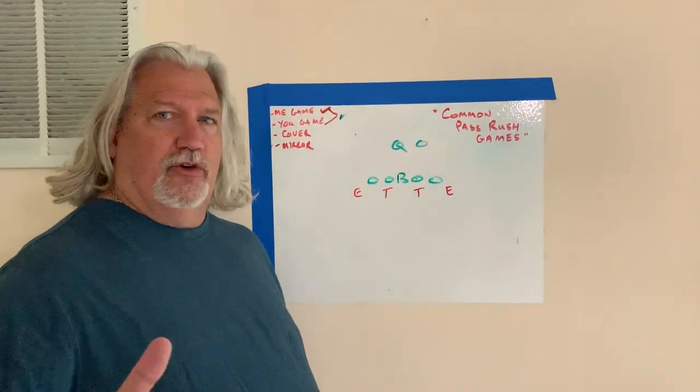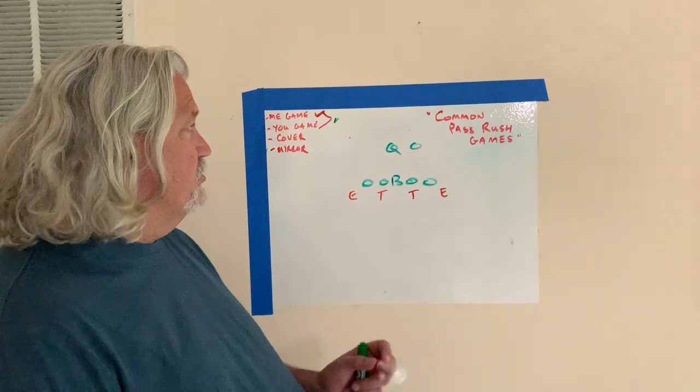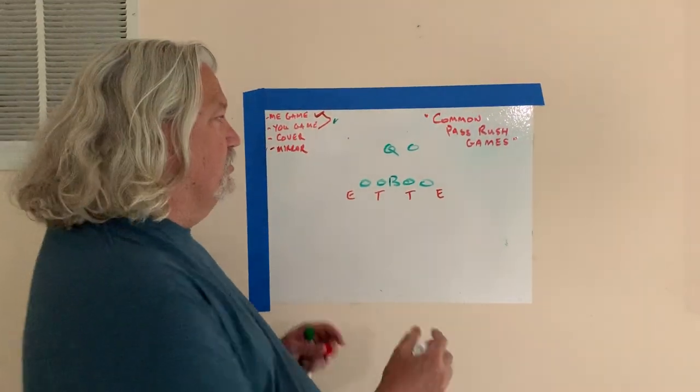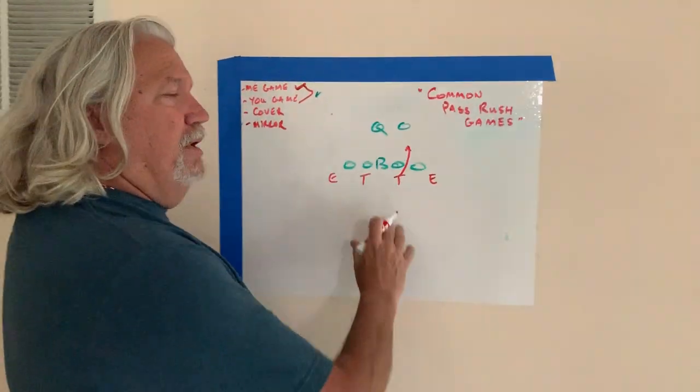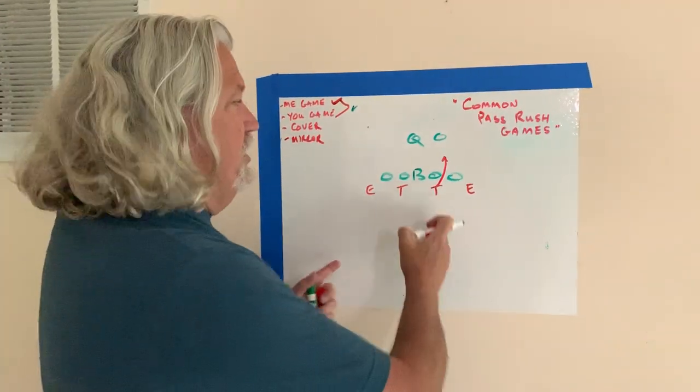These are used on third down or second and long pass rush situations. The first game we'll talk about is a me game. A me is your biggest guy, your inside tackle.